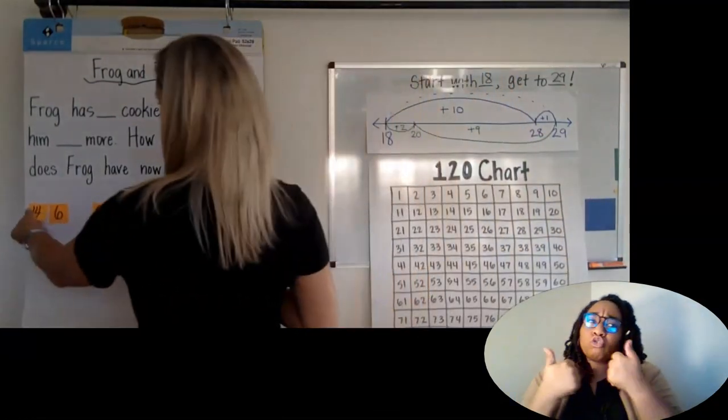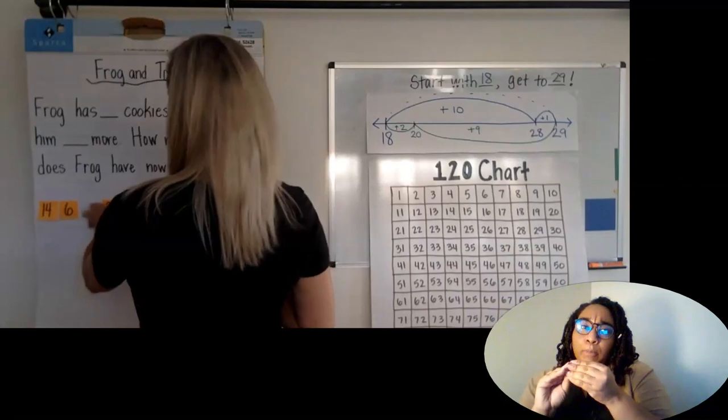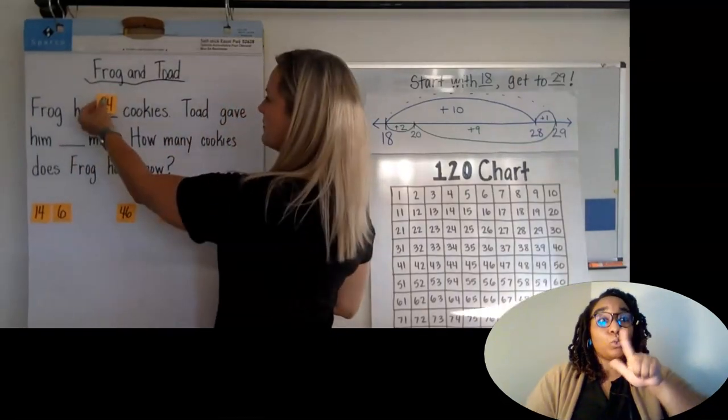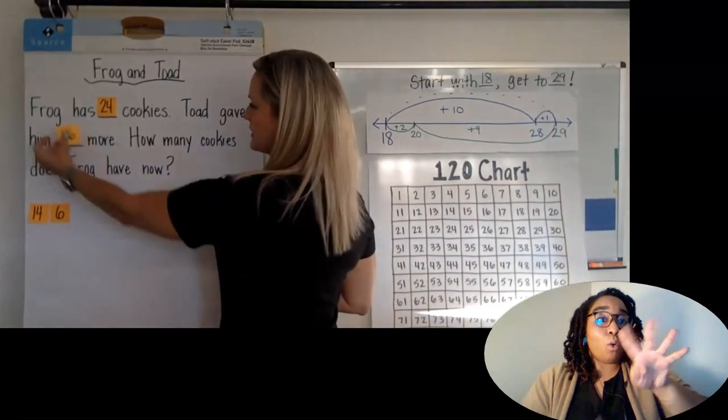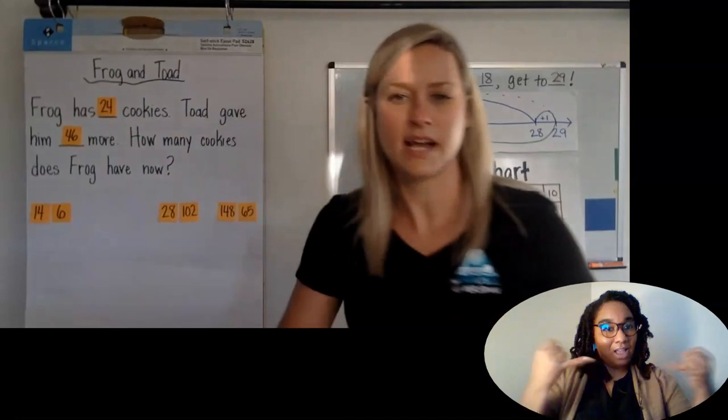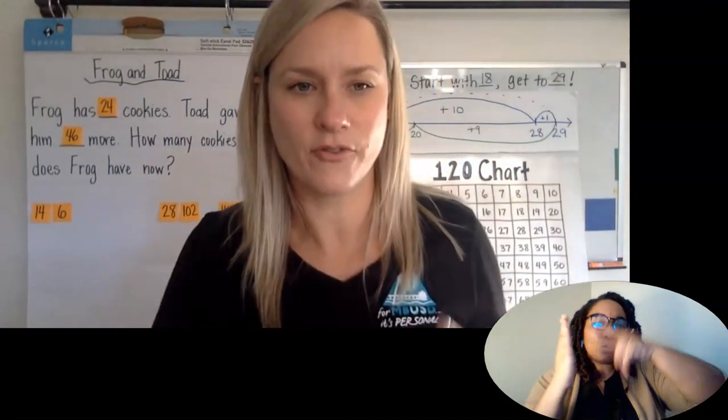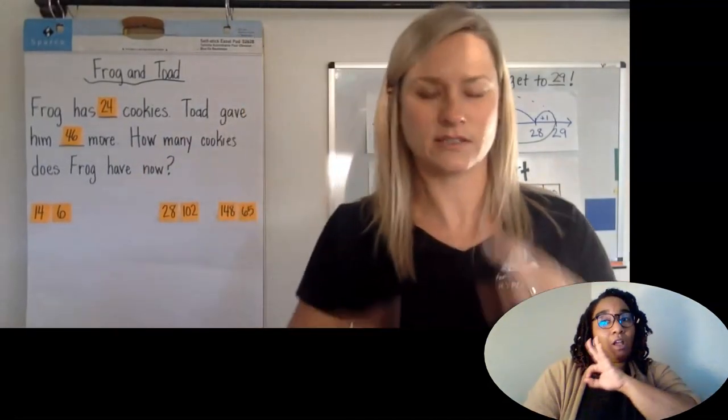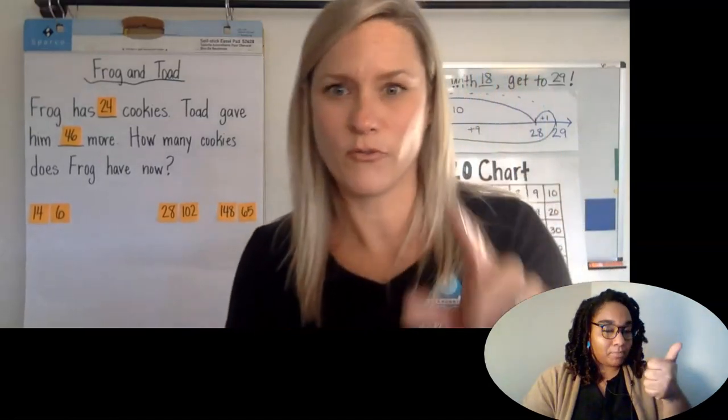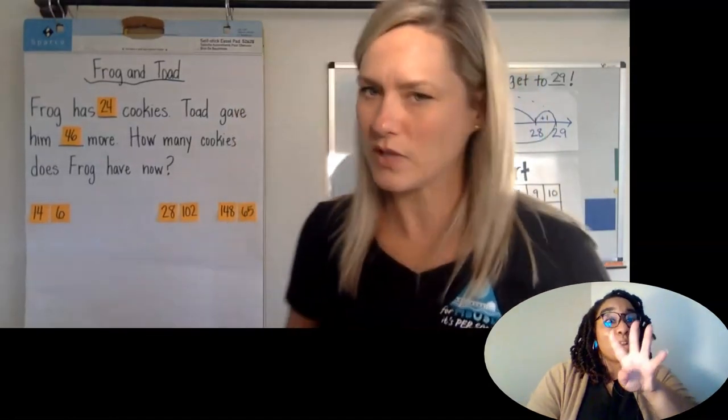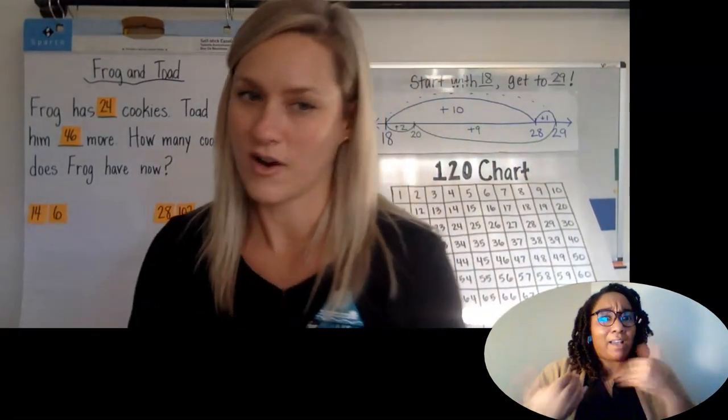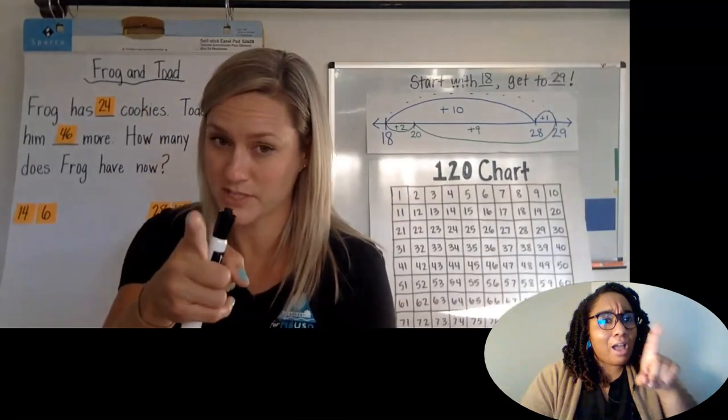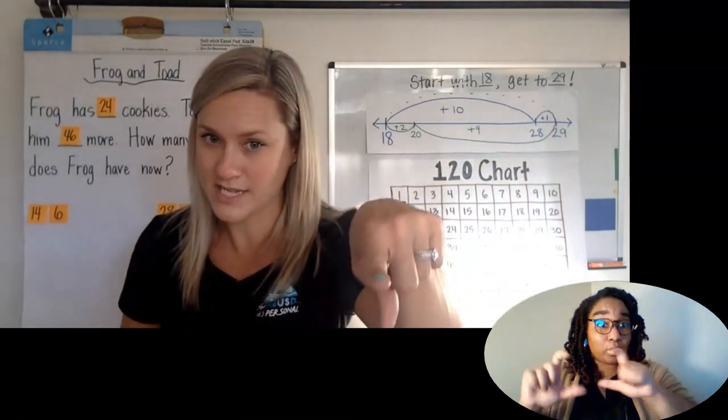Okay. So let's pull out, let's do, I'm gonna do 24 because that feels good to me. 24 on the first line and 46 on the second line. And then I have to read the story again. Frog has 24 cookies. Got it. Toad gave him 46 more cookies. Ooh, that's a lot more. How many cookies does Frog have now? All right. Did you pick your number set? Are you ready? All right. Your turn. Go solve. See you next time.